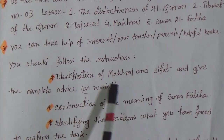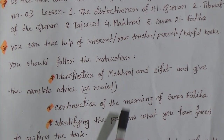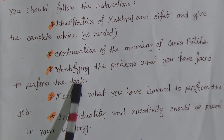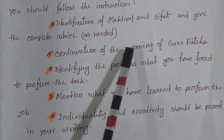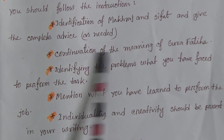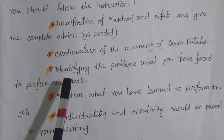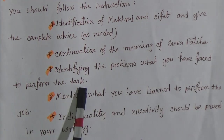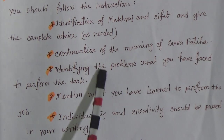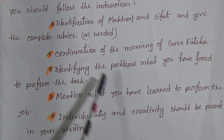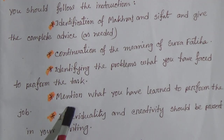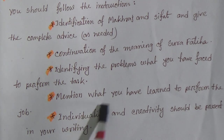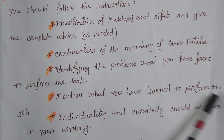If something is wrong, identify where it is wrong and how it should be pronounced. Then identify the problems you faced while performing the task. After completing these two things — two or three paragraphs — identify what kind of problems you faced and mention what you have learned to perform the job. What is your learning outcome?